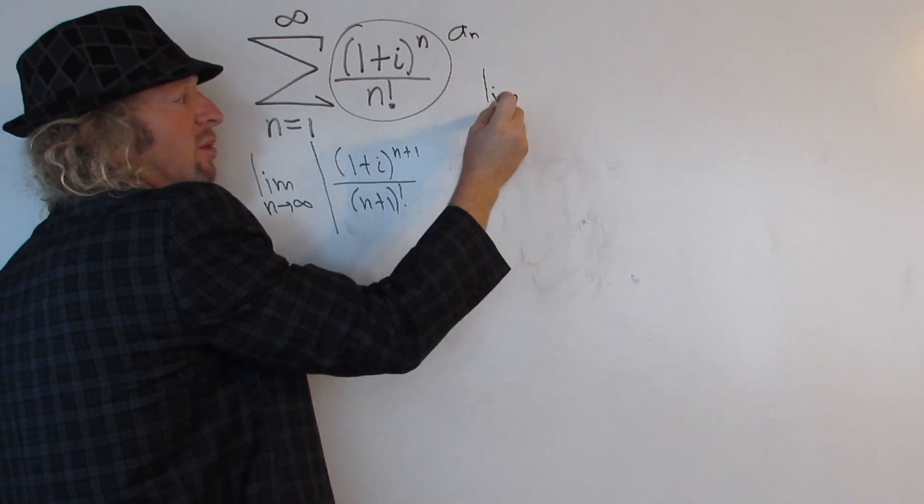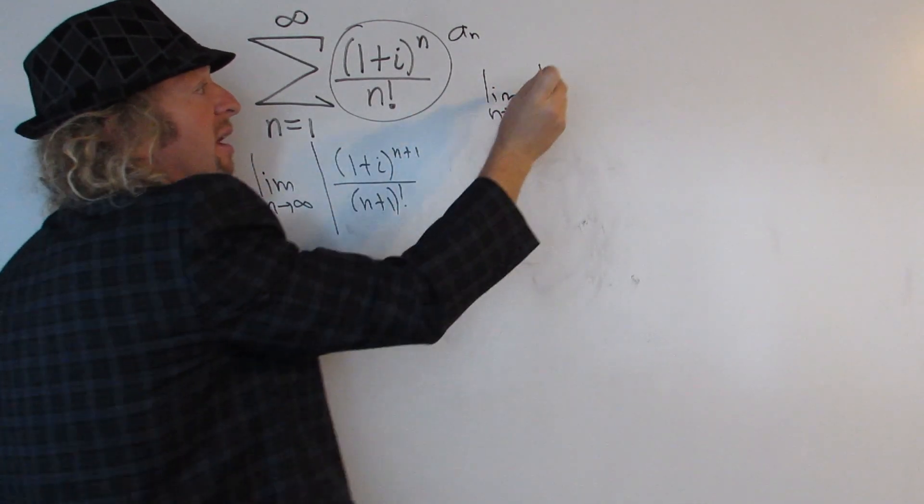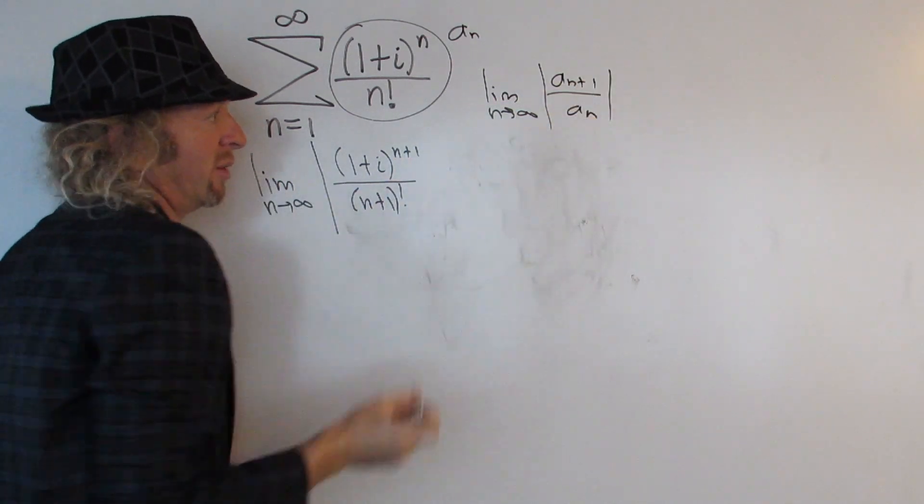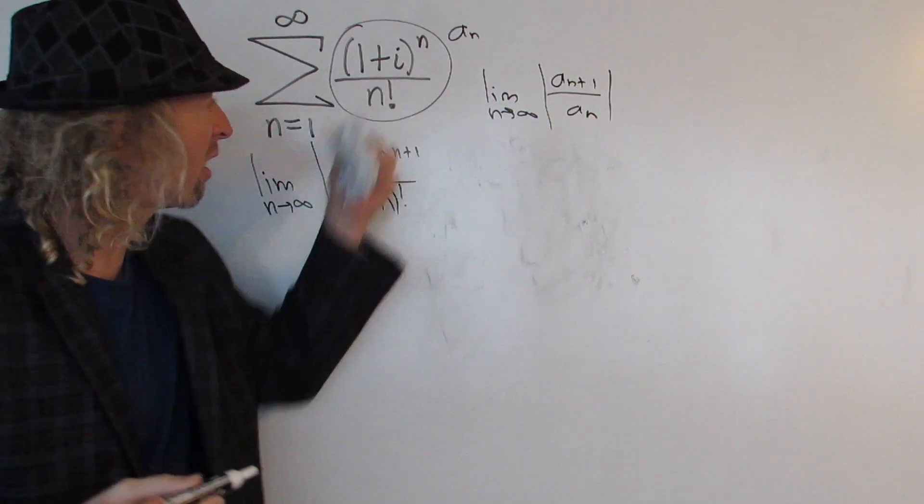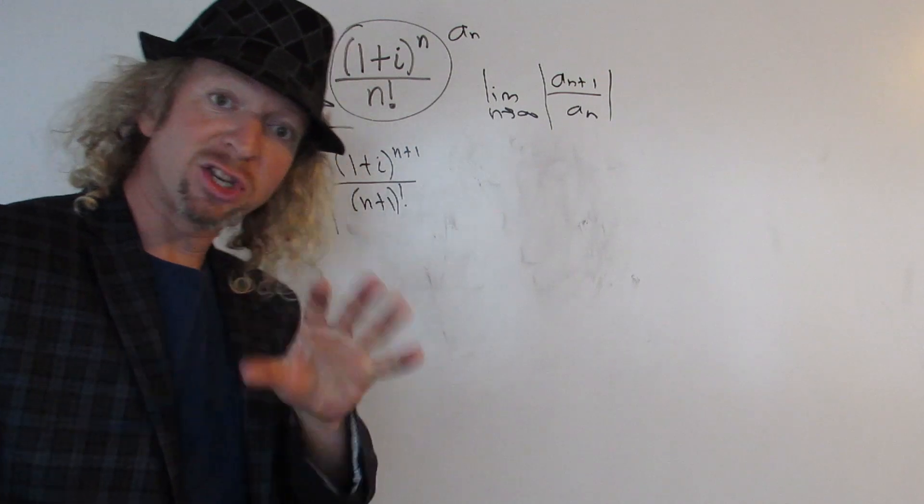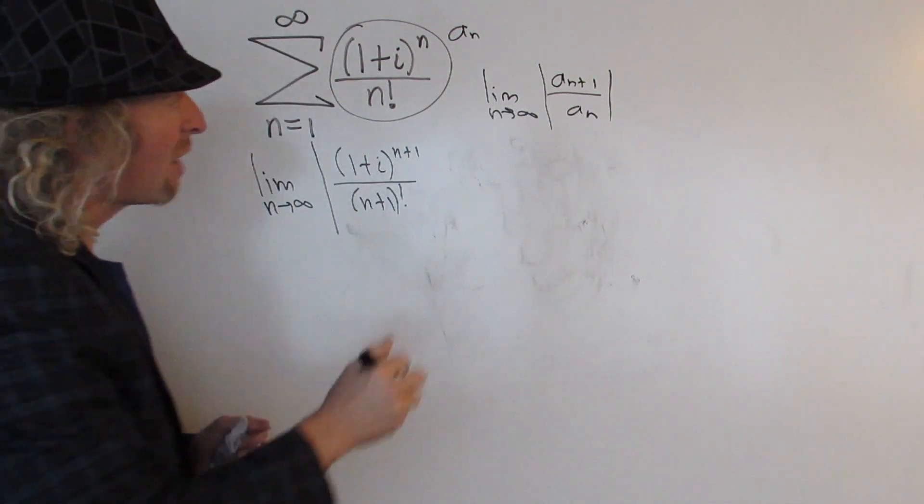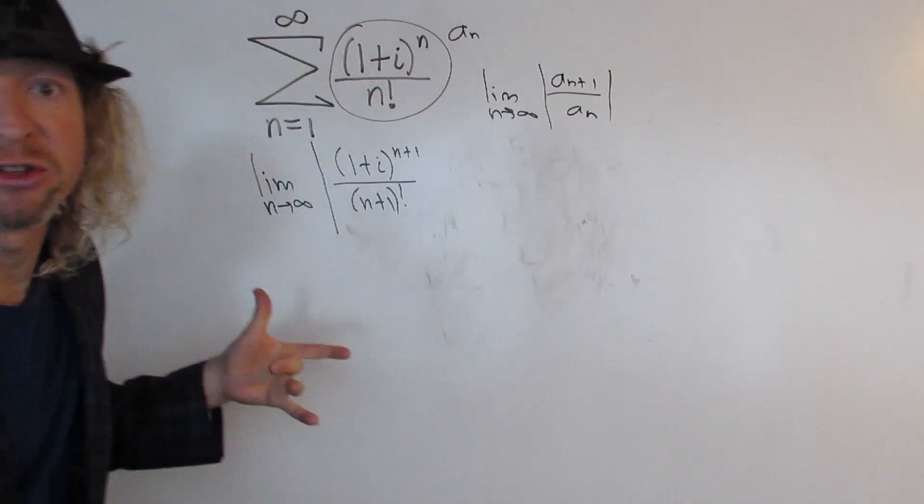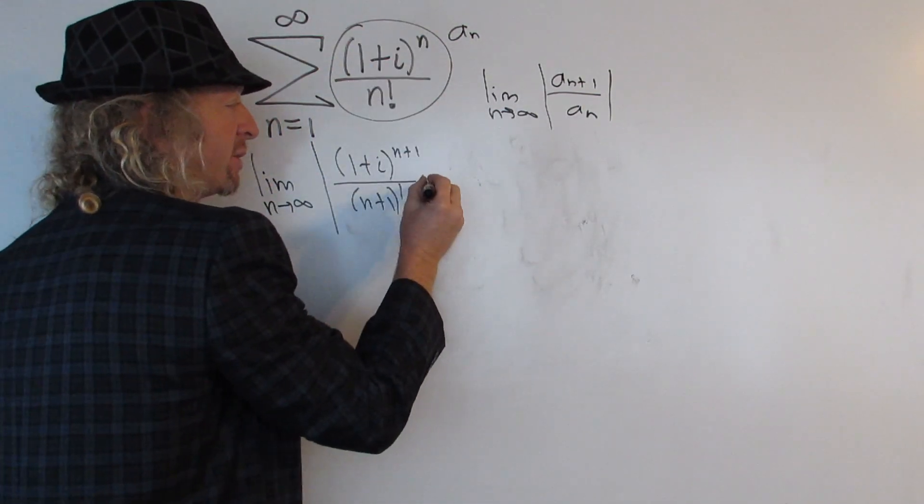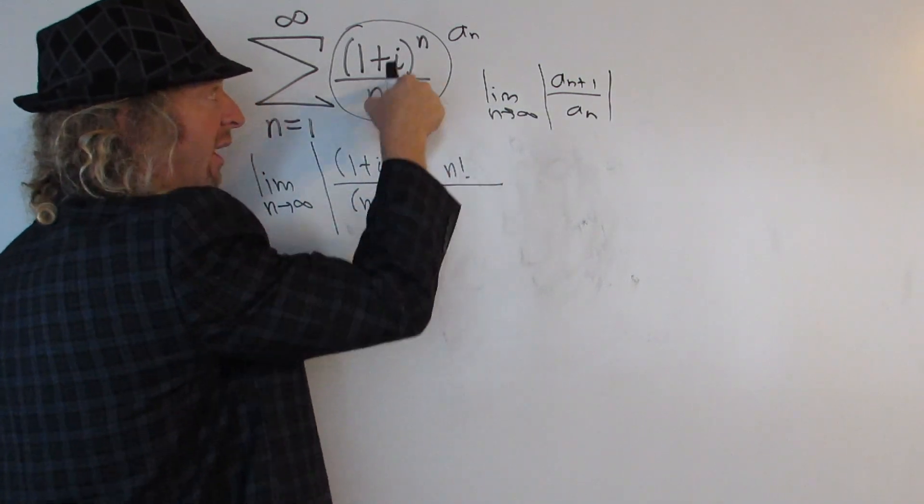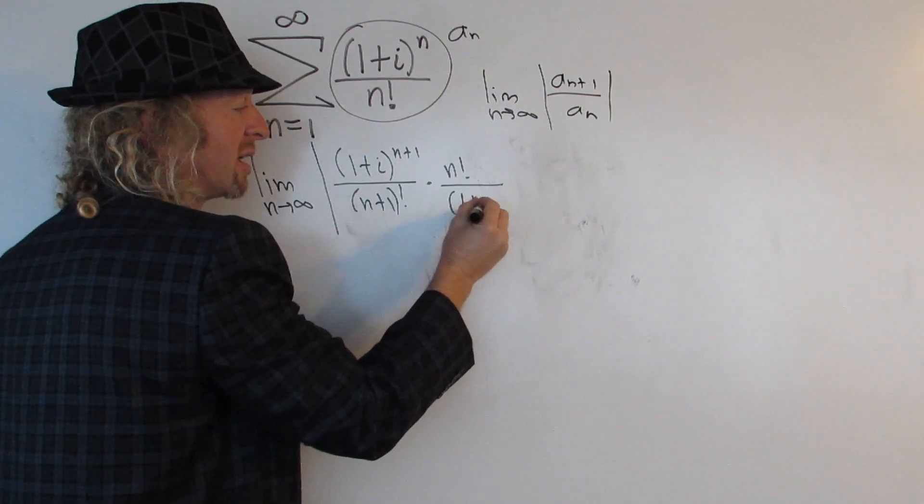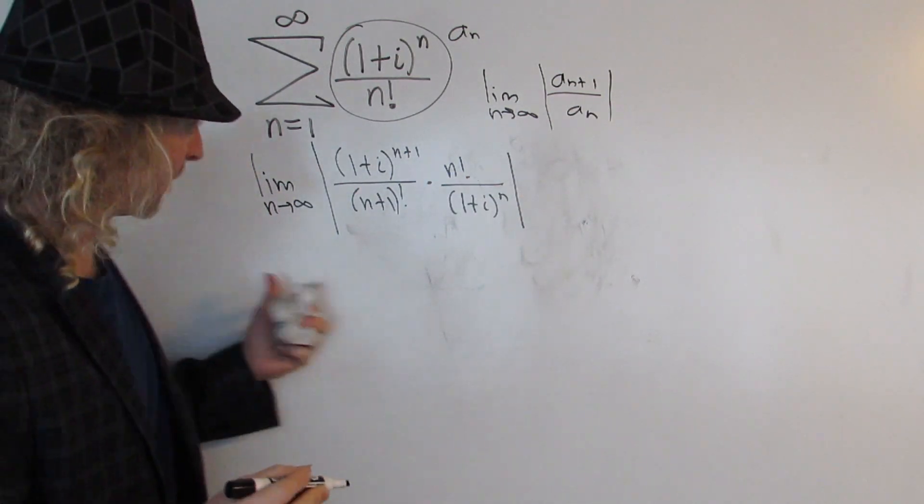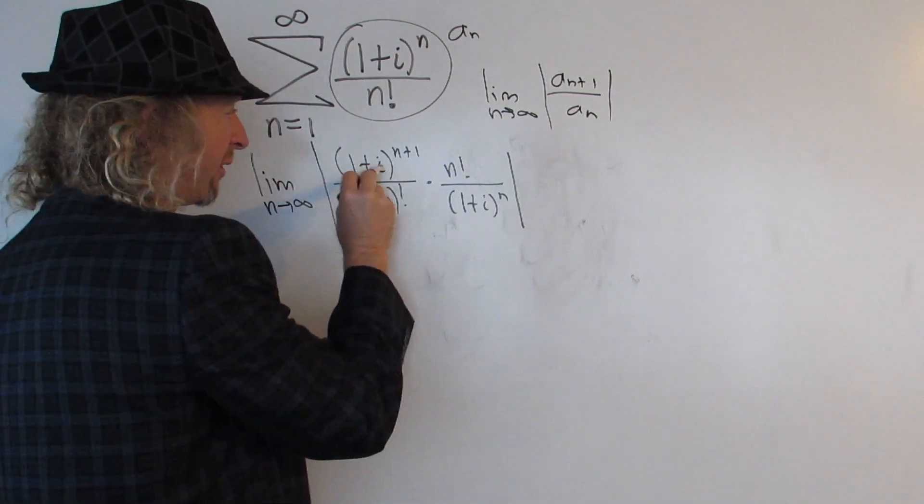Recall the formula for the ratio test is limit as n goes to infinity of absolute value of a sub n plus 1 over a sub n, right? So all we've written down so far is a sub n plus 1. We've replaced all of the n's with n plus 1. Now we're dividing by a sub n. So what that means is basically we multiply by the reciprocal. So we're just going to flip this. So times n factorial over, and then just this piece here, (1 plus i) to the n. Beautiful stuff. Some stuff happens here. Some nice stuff happens.